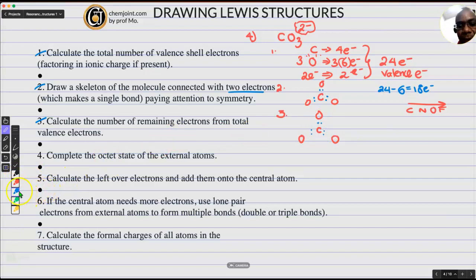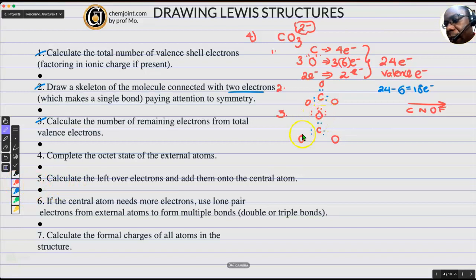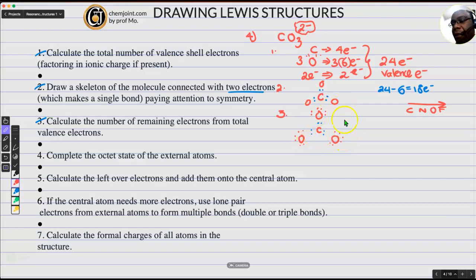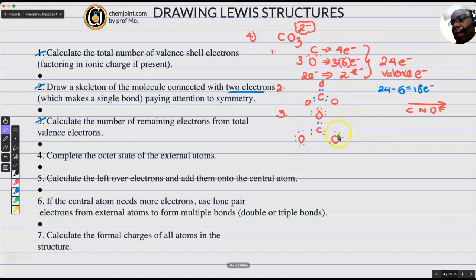So we need to satisfy the octet rule of those oxygens before we satisfy the carbon — the carbon has to wait. We have 18 electrons to account for. We give 6 to each oxygen: one, two, three, four, five, six — now there's eight around that oxygen. We do the same for the second and third oxygens. If I count all of them, I find that I've taken care of all 24 valence electrons.